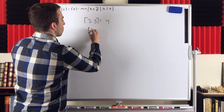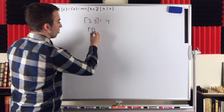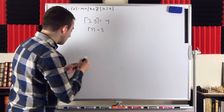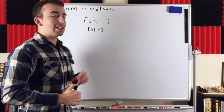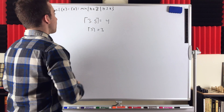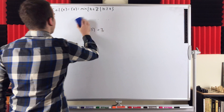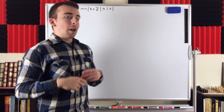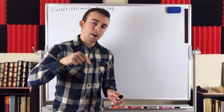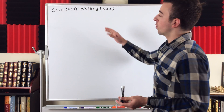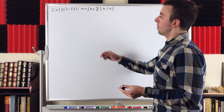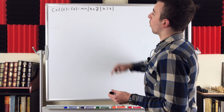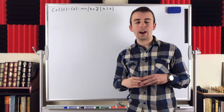What if we put an integer into the ceiling function? The ceiling of 3 is 3, because the smallest integer greater than or equal to 3 is 3 itself. The floor function works very similarly, except it rounds down to the nearest integer — it takes the maximum of all integers less than or equal to x.